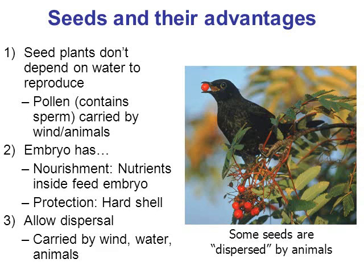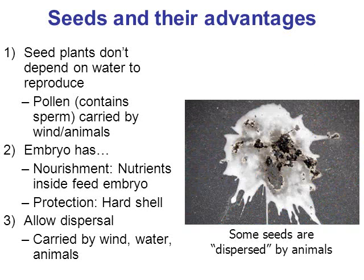And not just wind — here we're looking at angiosperms: here's a bird eating some berries and fruits. Eventually the seeds will be dispersed in a new location. The seeds will most likely pass through the digestive tract of the animal and then be deposited in another location.